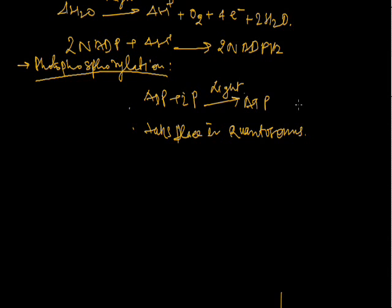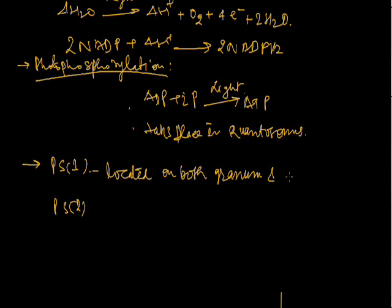If we see detail in photosynthesis, there are two pigment systems: pigment system 1 and pigment system 2. Pigment system 1 is located on both granum and interlamellar space, also known as stroma channels. Photosystem 2 is located only on granum.